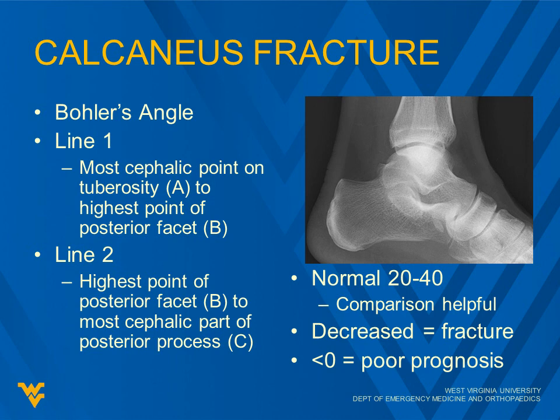Calcaneus fracture is easily missed because the calcaneus many times overlaps with other bones on x-ray, especially the AP view. On a lateral x-ray, we use something called Bohler's angle to help us look for an occult fracture.